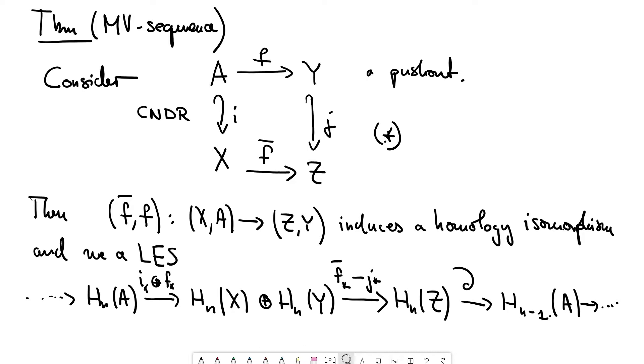And we get a long exact sequence which looks very similar to the Mayer-Vietoris sequence for an excisive triad. So in the situation where this map F is not just any map but it's also a closed inclusion.